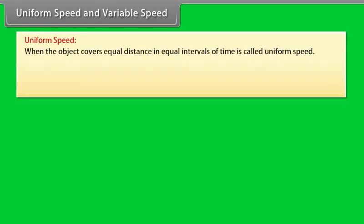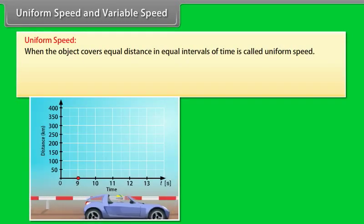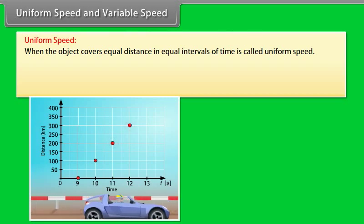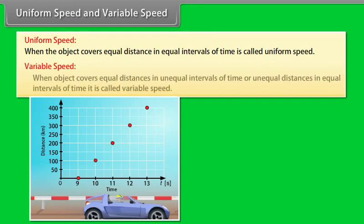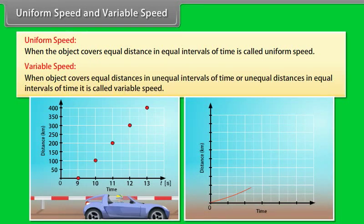Uniform speed and variable speed. Uniform speed: when an object covers equal distances in equal intervals of time, it is called uniform speed. Variable speed: when an object covers equal distances in unequal intervals of time, or unequal distances in equal intervals of time, it is called variable speed.